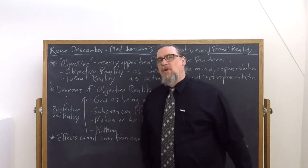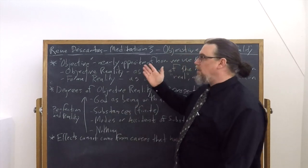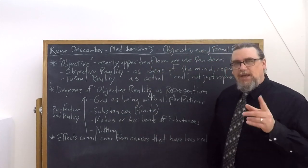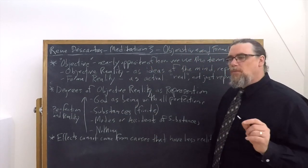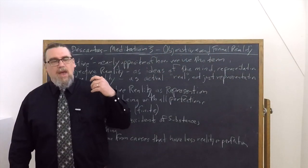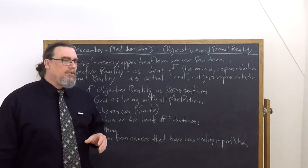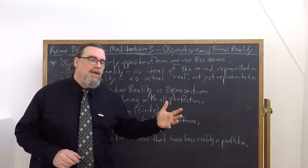What do we contrast to that? The reality that something would have, say, out there in the world. And that is what Descartes typically calls formal reality. He will also use the term actual in a few places. And he will also talk about something being eminent.